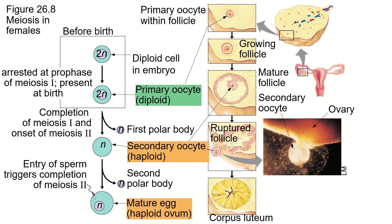So in the male, we start with one cell and we end up with four haploid cells — easy peasy, no problem. In the human female, we start off with one diploid cell and we end up with one haploid cell and two polar bodies. Why? In order to produce one cell that is big enough to create a blastocyst, which is this ball of cells that is needed to create an embryo.